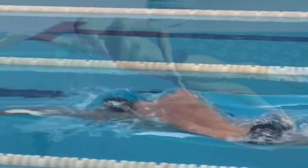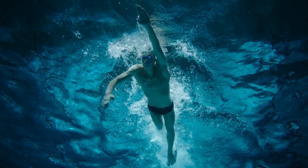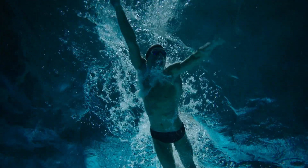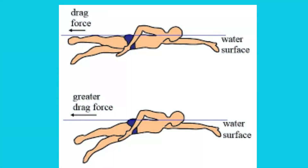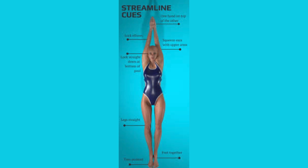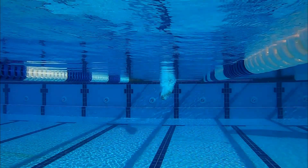Next, let's talk about drag. Drag is a type of water resistance that slows you down. The faster you swim, the more drag you create. There are two kinds of drag in swimming: frontal drag and surface drag. Frontal drag happens when your body hits the water, while surface drag is caused by friction between your body and the water. To reduce both types, you need to focus on streamlining and perfecting your swimming mechanics. This is where hydrodynamics in swimming plays a critical role — by optimizing your body's interaction with the water, you reduce resistance and boost your speed.